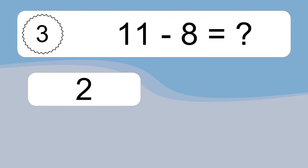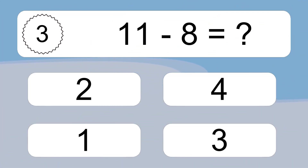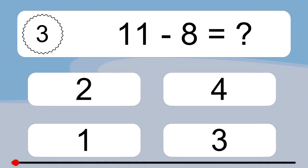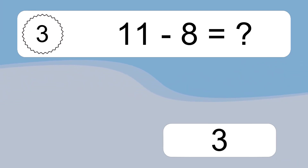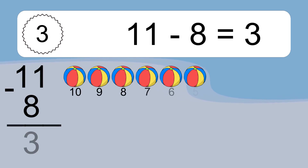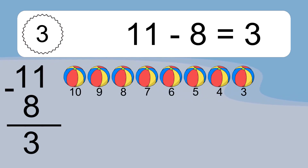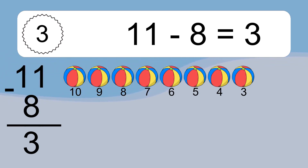11 minus 8 equals what? 11 minus 8 equals 3. Let's count it: 10, 9, 8, 7, 6, 5, 4, 3.